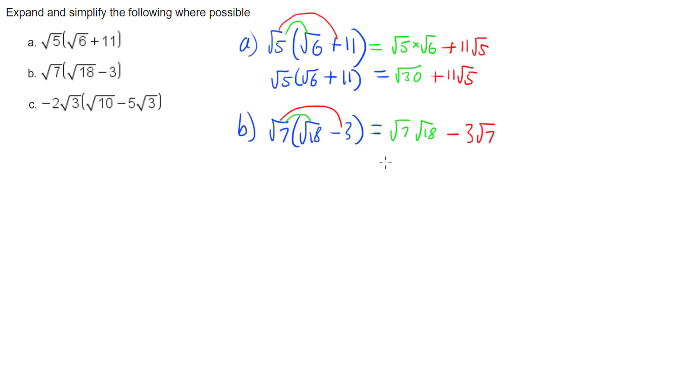Root 7 times root 18 gives me the square root of 126, minus 3 root 7. Looking at these, can I simplify them? I can't simplify the root 7, but I can simplify root 126. Root 126 can be simplified by taking the factors of 9 and 14.